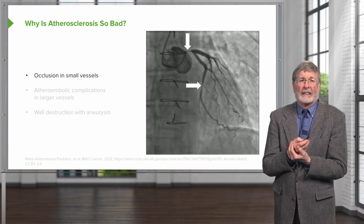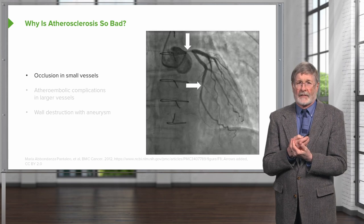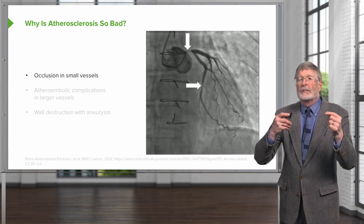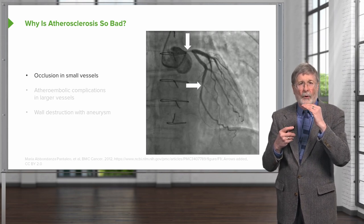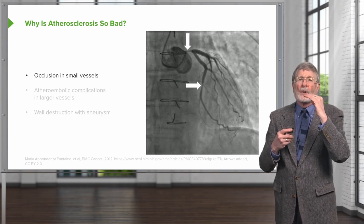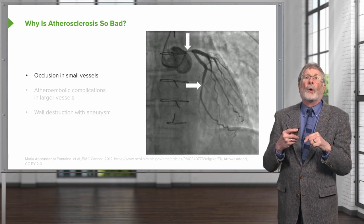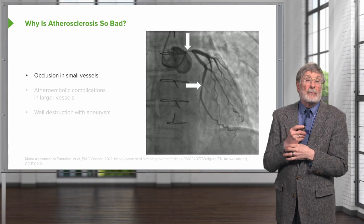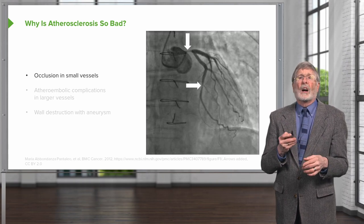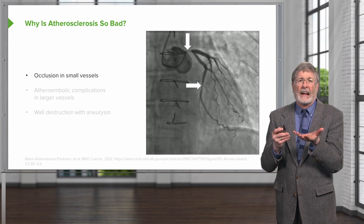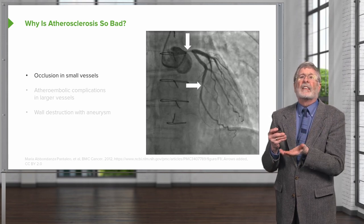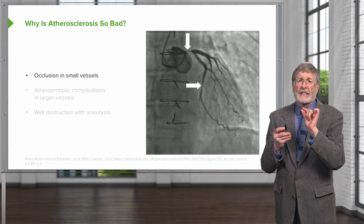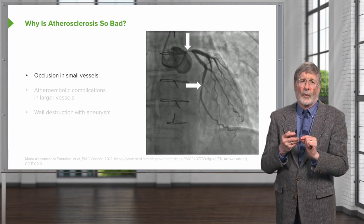So why is atherosclerosis so bad? In small vessels — this is showing a coronary angiogram — we have small vessel occlusion. The plaque is growing and blocking blood flow. In a coronary, a small vessel, maybe 50-60% of the vessel lumen is blocked by the growth of this plaque, and now we're not getting adequate flow into the distal vasculature. The two arrows indicate areas of narrowing in the coronary.